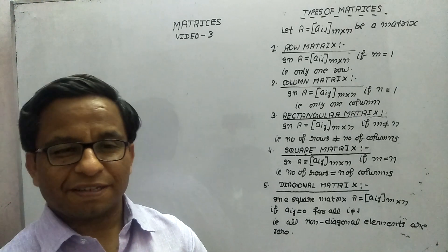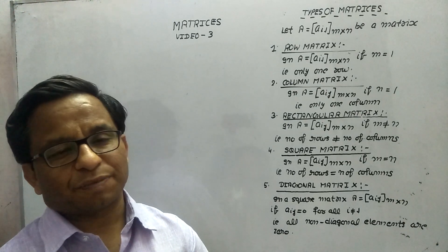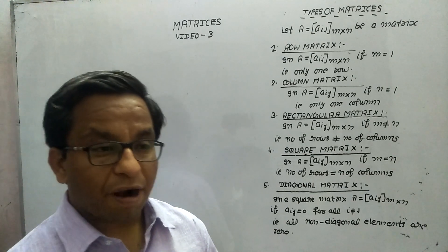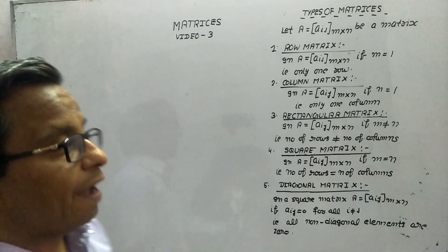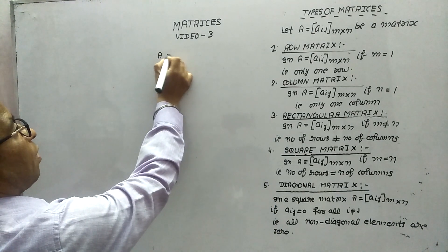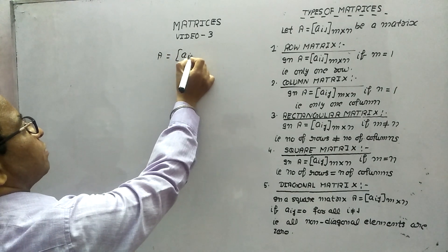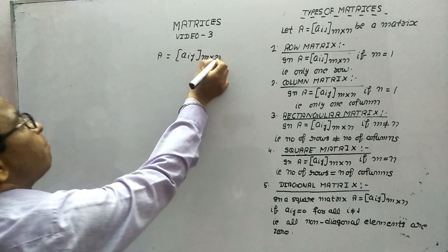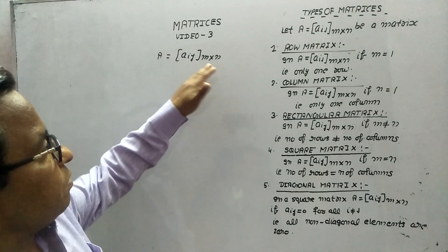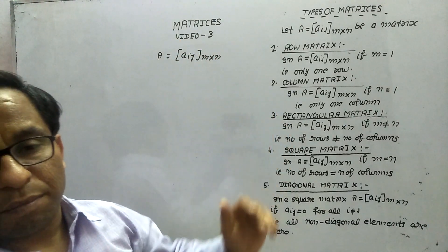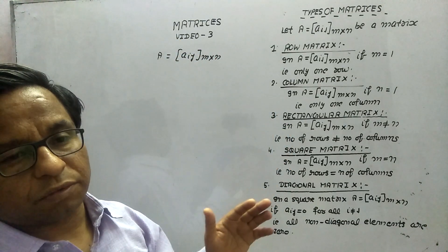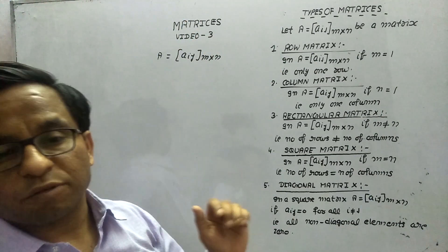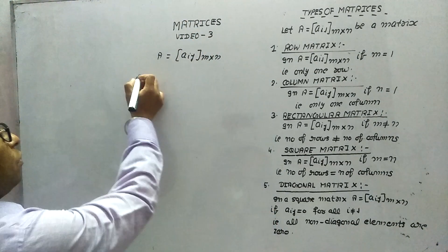Today in part 3 of matrices, I will explain different types of matrices. In part 1, I had explained the compact form of a matrix given by Aij, M by N, where M is the number of rows and N is the number of columns. On the basis of this, I will explain all the types of matrices.